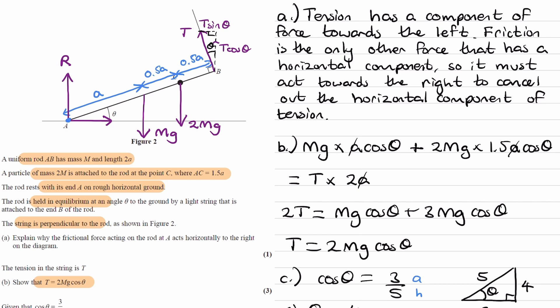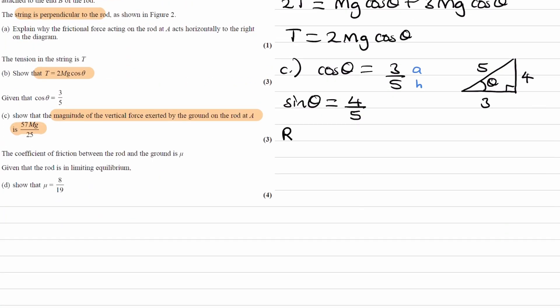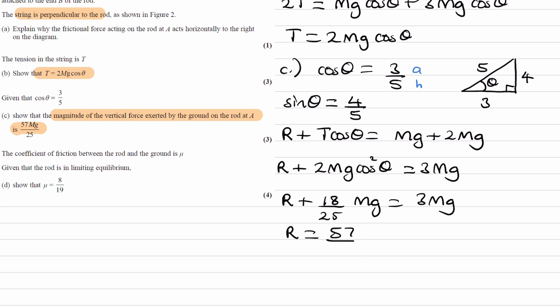The upwards component of tension plus R should equal the two downward forces if the system is in equilibrium, which it is. So R plus T cos theta is equal to mg plus 2mg. We know what T is - T is equal to 2mg cos theta. So R plus 2mg cos theta times cos theta again, so squared, is equal to 3mg. Cos theta is equal to 3 over 5, so cos squared theta would be 9 over 25. Times that by 2, that's 18 over 25. If you were to do 3 minus 18 over 25, you would get 57 over 25. And that's part C done.